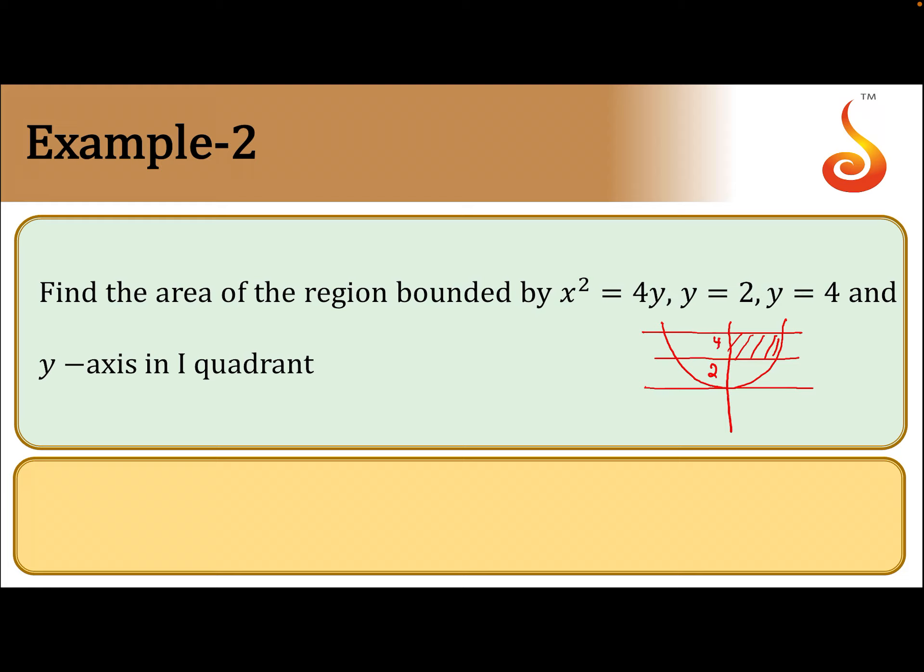This is 2 and this is 4. So the integral formula is x dy, where a to b are the limits of y. In this case, this is 2 to 4. x is nothing but the square root of 4y dy. Because they are talking only first quadrant, that's why we take 2 to 4.